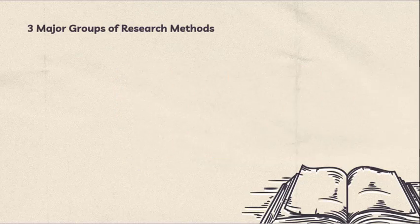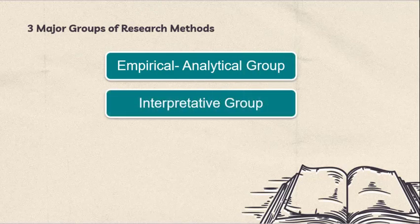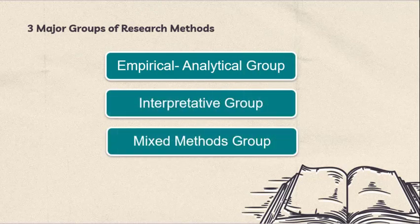There are three major groups of research methods: the Empirical Analytical Group, the Interpretative Group, and the Mixed Methods Group. Let's discuss the differences of these three groups in the next section.